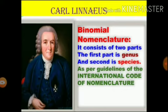Binomial nomenclature by Carolus Linnaeus: binomial nomenclature is used to identify each organism. This method was suggested by Carolus Linnaeus. It consists of two parts — the first part is the genus and the second part is the species.